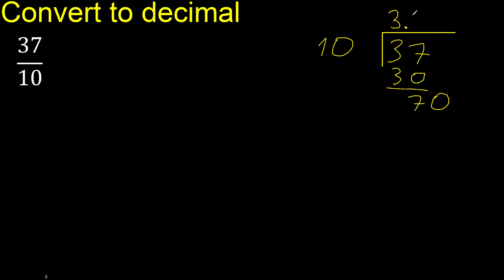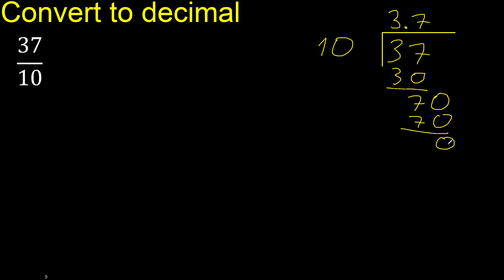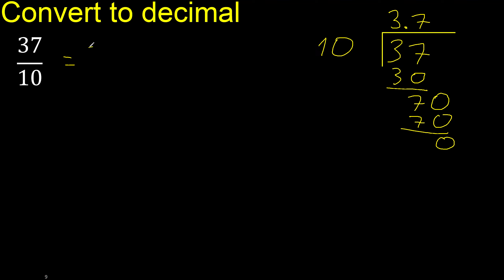Multiplied by 7 is exact — 70 is not greater. Subtract 0, result is 0. Therefore finish.